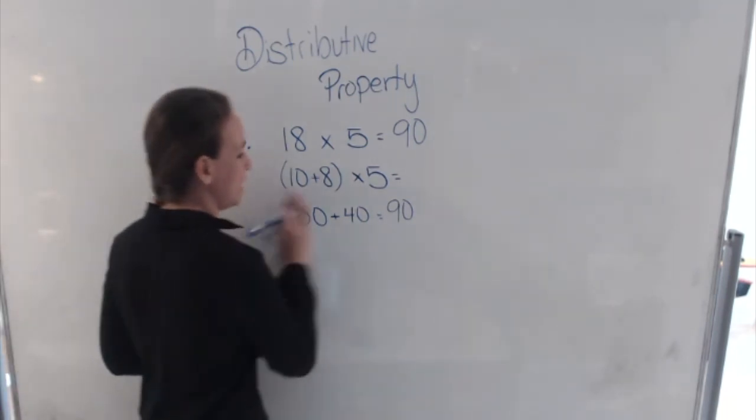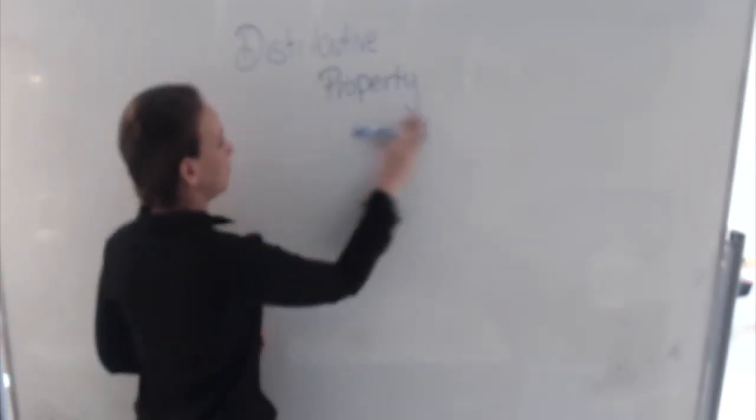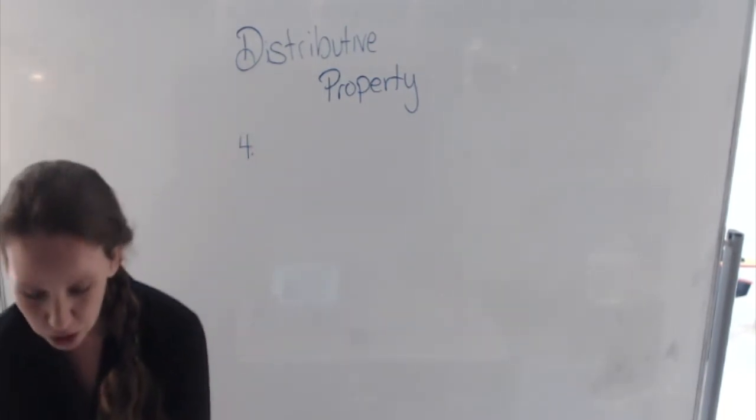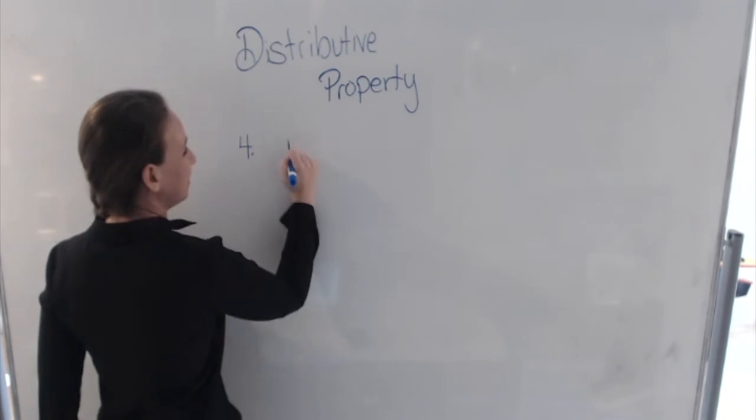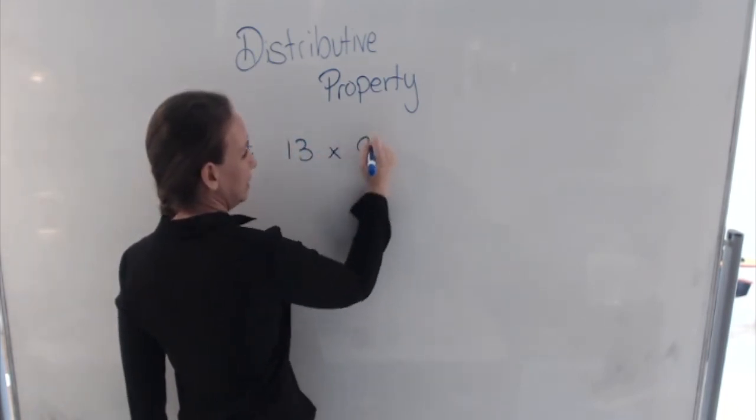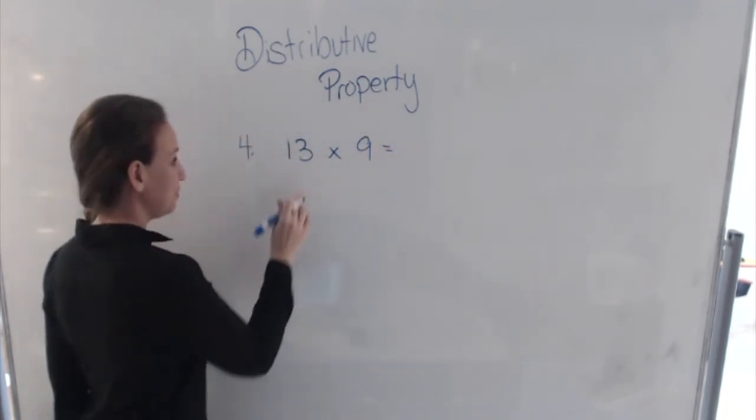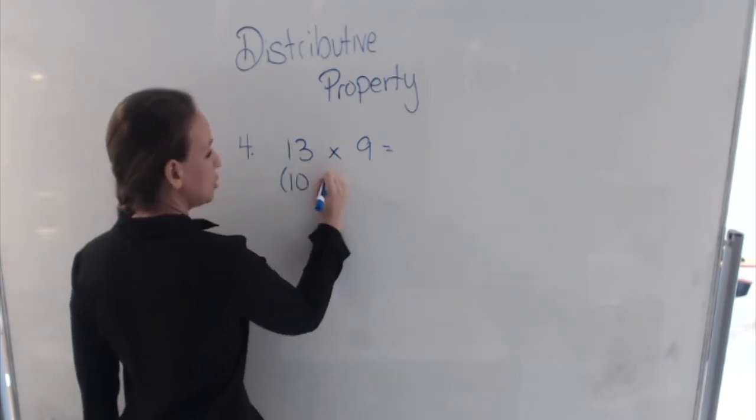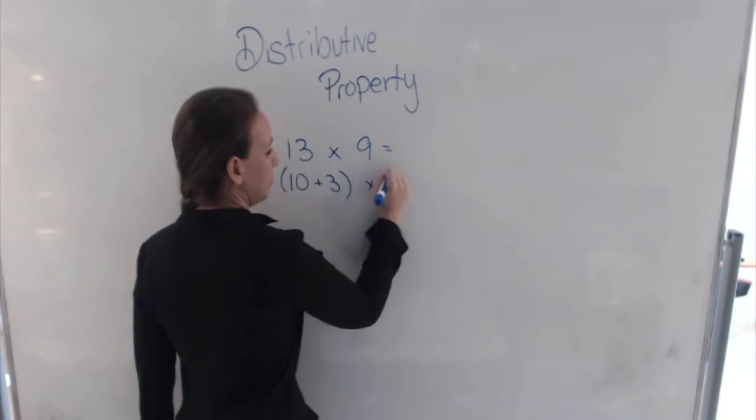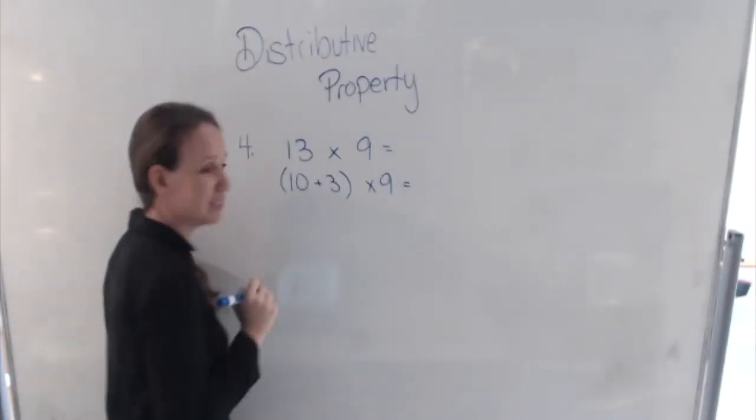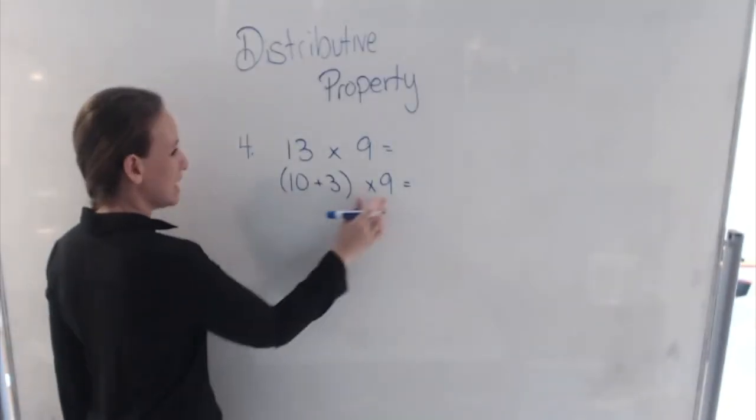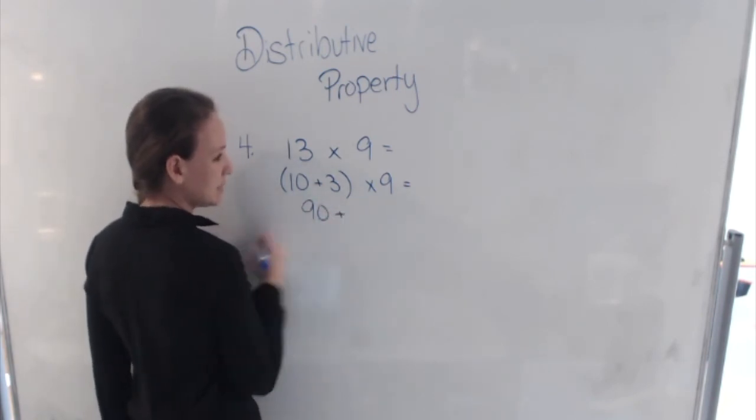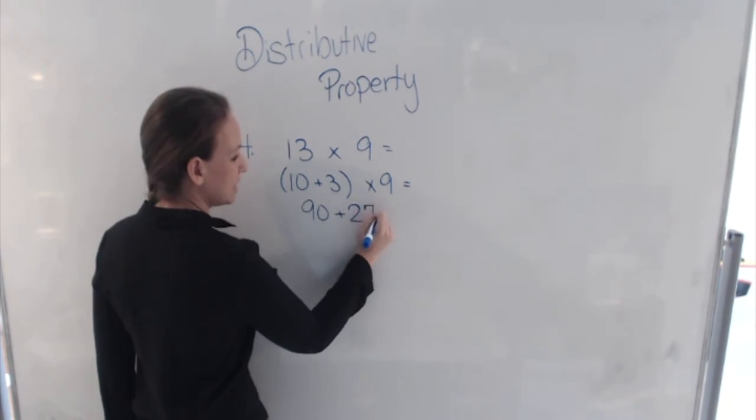And for the last one for the day, number 4. Let's do this one. 13 times 9. Well, we can rewrite 13 as 10 plus 3 times 9. And now let's add them. 10 times 9 is 90, plus 9 times 3 is 27.